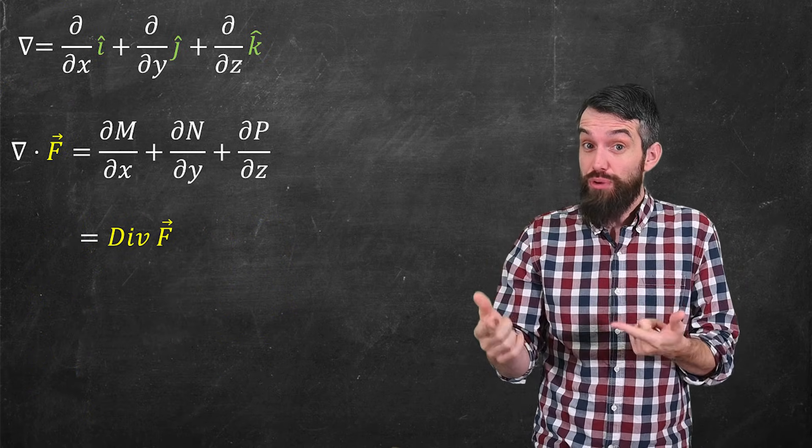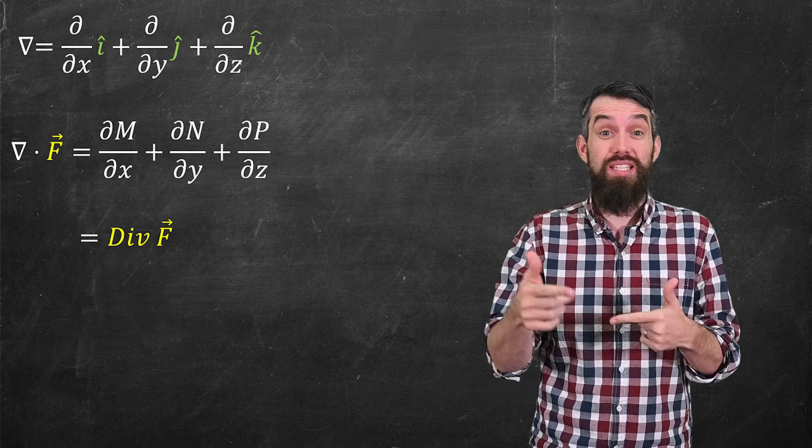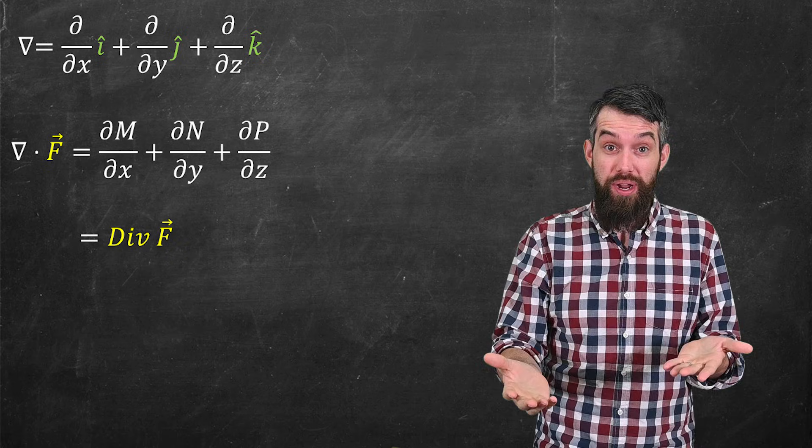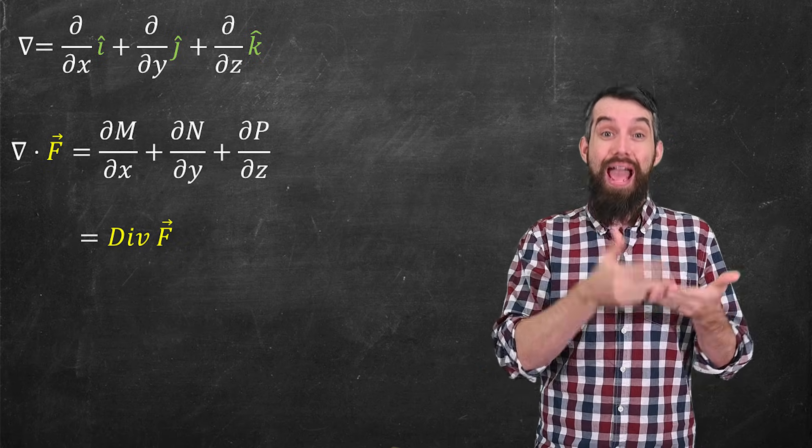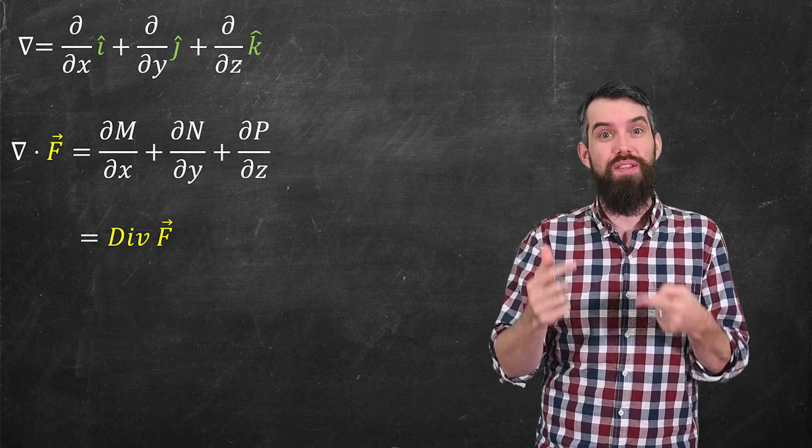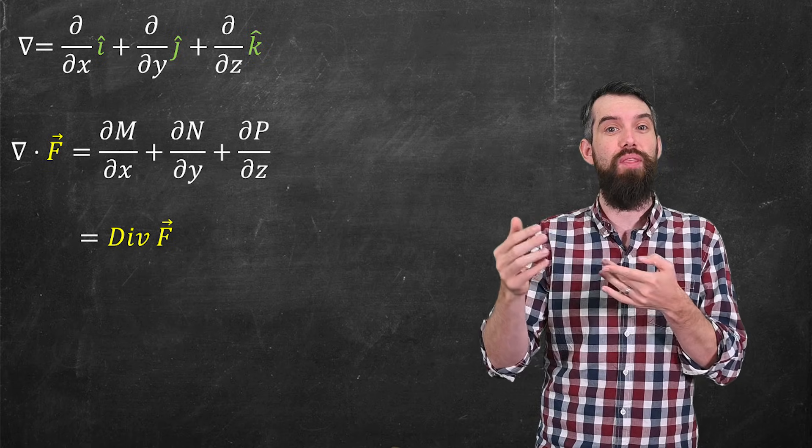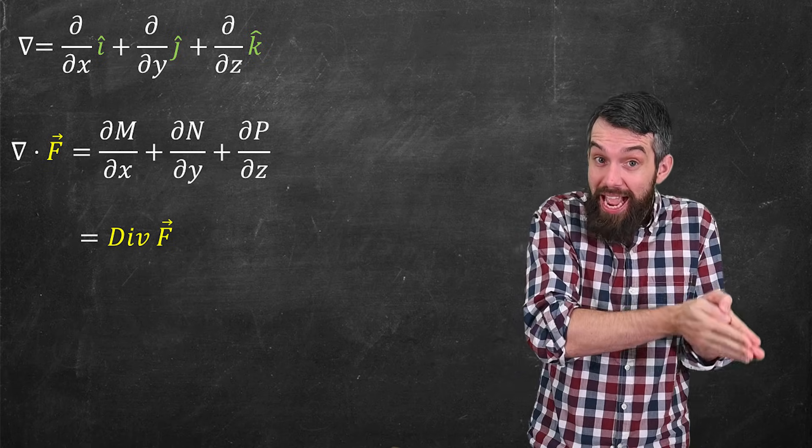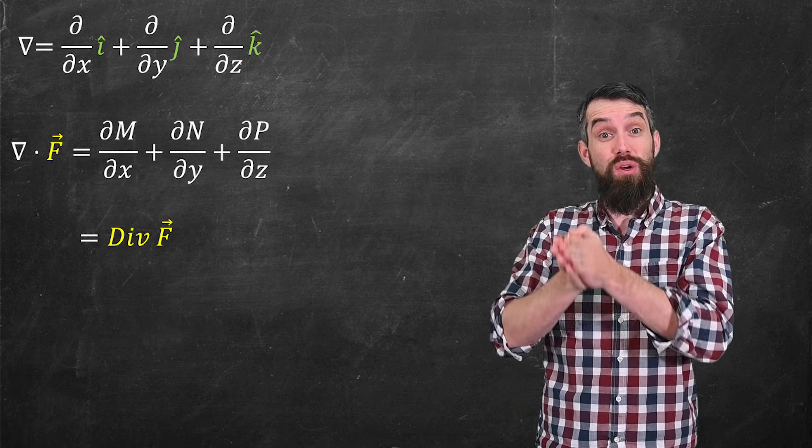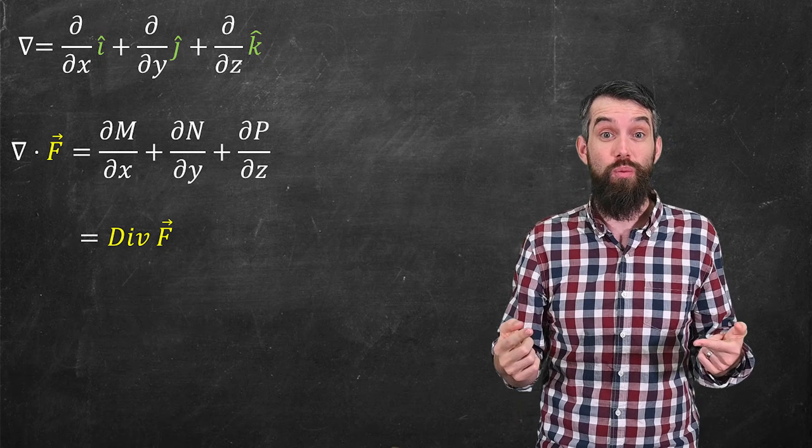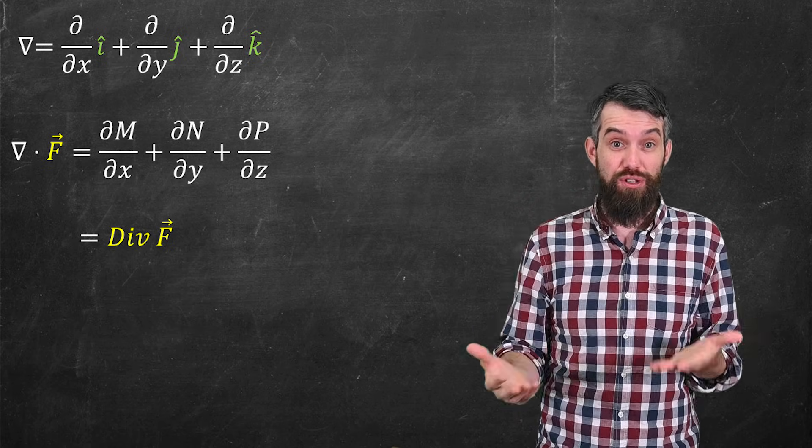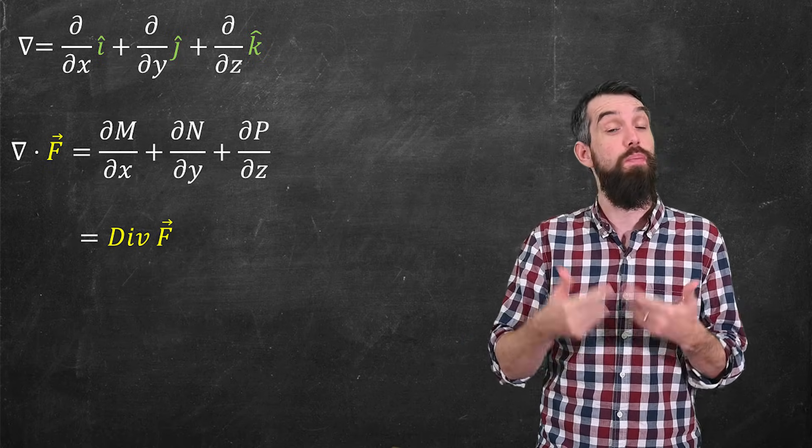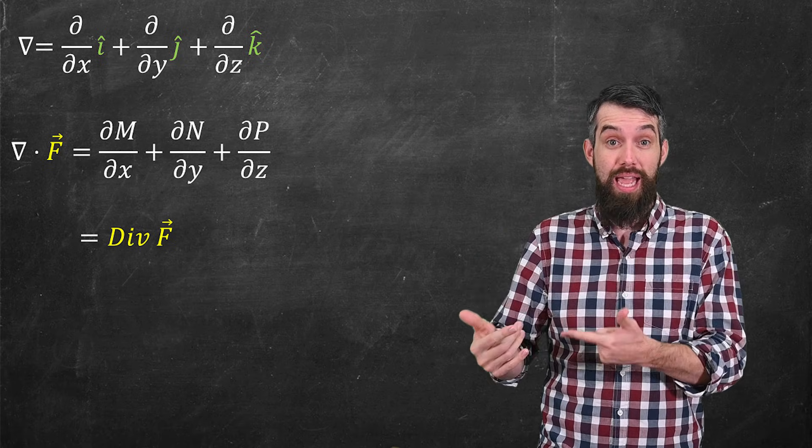Now we can actually simplify the expression for divergence in much the same way as we simplify the expression for curl. We have a del operator, which is just the partial with respect to x in the i hat, the partial with respect to y in the j hat, and the partial with respect to z in the k hat. Then if I take the dot product of this del operator with the field F, then what do I get? Well, precisely the divergence. The partial of m with respect to x, the partial of n with respect to y, and the partial of p with respect to z.